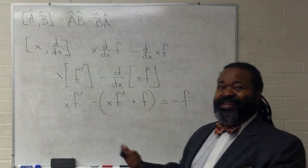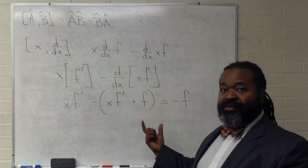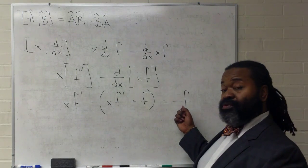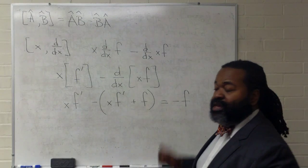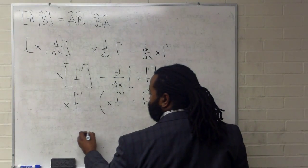Now, since we've set up a commutation relation, it ends up not being zero. We have to remove the test function. And if we remove that, then what we're left with is the following.